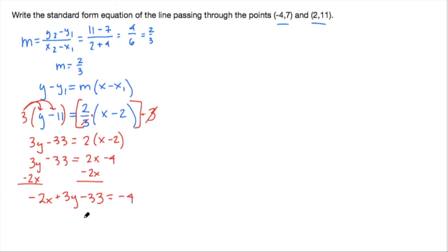Well, I've got to get my constants to the other side. We're going to add 33 to both sides, and I have negative 2x plus 3y is equal to positive 29, but that's not quite there yet. So I'm going to rewrite it up here. Negative 2x plus 3y equals 29.